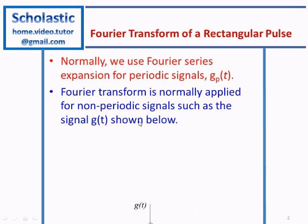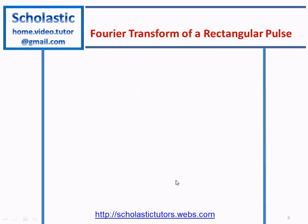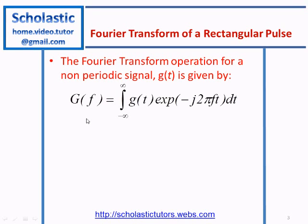Such as the signal g(t) shown below, where the signal is like a pulse in the time domain. The Fourier transform operation for a non-periodic signal g(t) is given by the mathematical expression: g(t) multiplied by exponential negative j 2π ft, integrated from minus infinity to plus infinity dt. This gives you a function in the frequency domain called capital G(f).